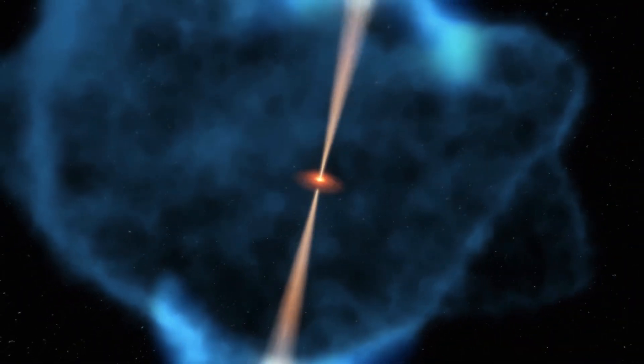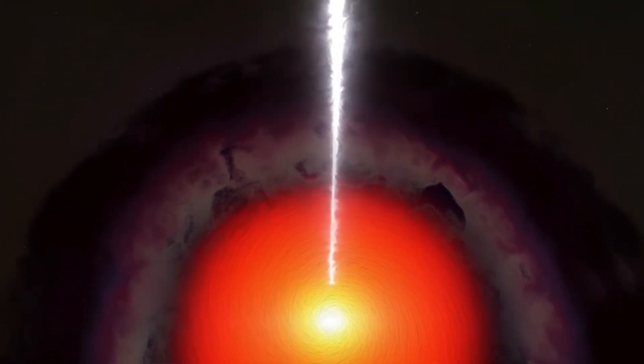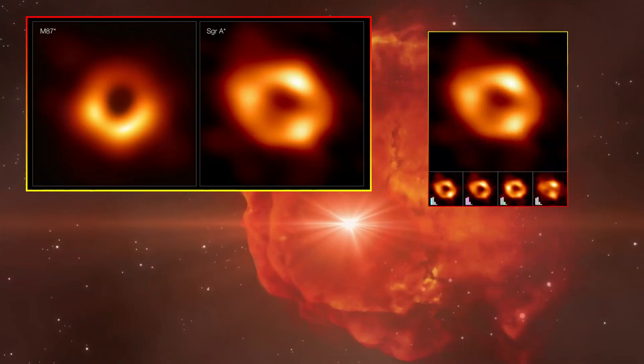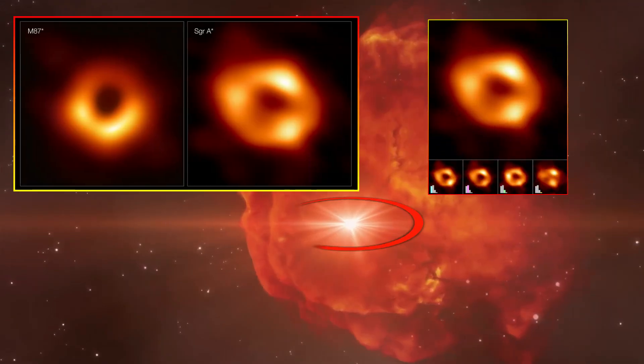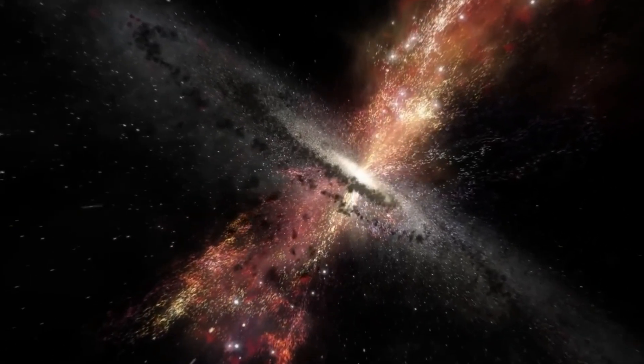Similar jets have been observed in other galaxies, where black holes unleash colossal outbursts of energy, shaping their surroundings in dramatic ways. This theory suggests that Sagittarius A star was far more active in the past than previously thought, potentially altering our understanding of the Milky Way's history.